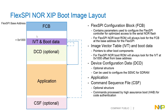Next we'll have your IVT and boot data. The IVT is your image vector table and it's really a list of pointers to other boot components. The ROM always looks for your IVT for a FlexSPI NOR boot at a 0x1000 offset from your base address, so that's what's shown in the diagram here.